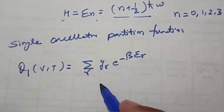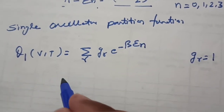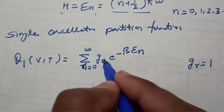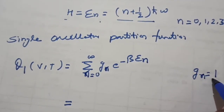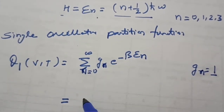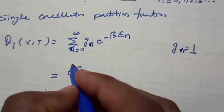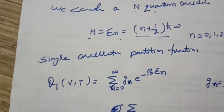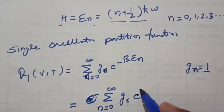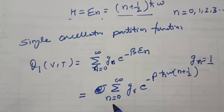For all the states, g_r equals 1, and n ranges from 0 to infinity. The degeneracy factor g_n equals 1. So we write the partition function as the summation from n equals 0 to infinity of e to the power of minus beta h-bar omega times (n + 1/2).